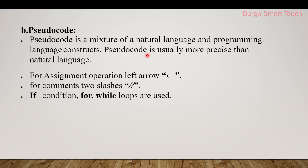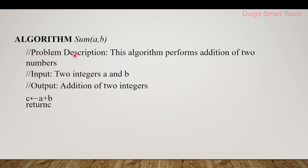The second way is pseudo code. Pseudo code is a mixture of natural language and programming language, and is usually more precise than natural language. For assignment operations, a left arrow (←) is used instead of equals. For comments, a double slash (//) is used. If conditions, for loops, and while loops are used. For example: input — two integer values A and B; C ← A + B; return C. These steps represent the pseudo code for addition of two numbers.